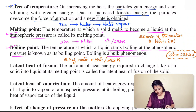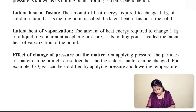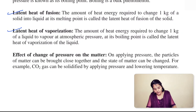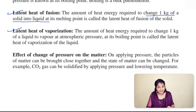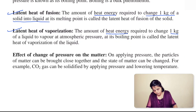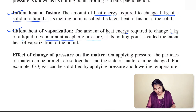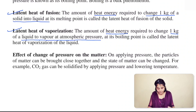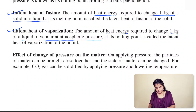Two important terms: latent heat of fusion is the amount of heat energy required to change 1 kg of a solid into liquid at its melting point. Latent heat of vaporization is the heat energy required to change 1 kg of a liquid into its vapor at atmospheric pressure (at its boiling point). This latent heat is used to break the force of attraction between the particles.